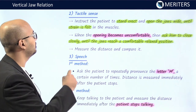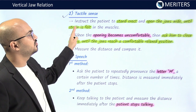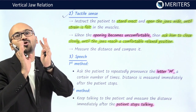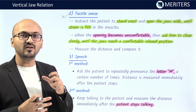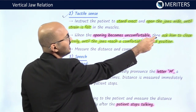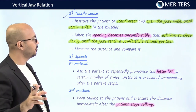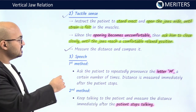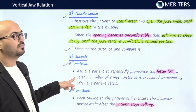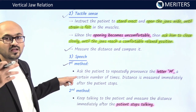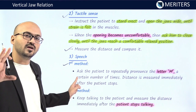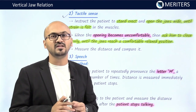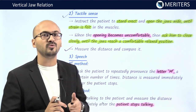The tactile sense proprioceptive method: instruct the patient to stand erect and open the jaw wide until strain is felt in the muscle. Once the opening becomes uncomfortable, ask the patient to close slowly until the jaws reach a comfortable position, then measure the distance. For the speech method, ask the patient to repeatedly pronounce words ending in M, like 'arm' or 'ram.' With every repetition, the patient comes to the natural vertical dimension at rest. Measure immediately after the patient stops, and be quick and prompt.